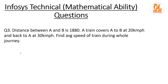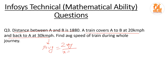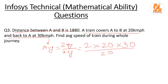Next question — average speed. The distance between A and B is 1180 km. A train covers A to B at 20 km/h and returns to A at 30 km/h. Since the distance is the same both ways, use the average speed formula: 2xy/(x+y) = 2×20×30/(20+30) = 1200/50 = 24 km/h.